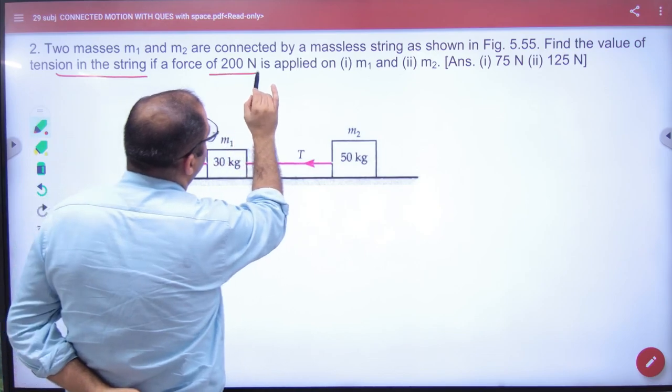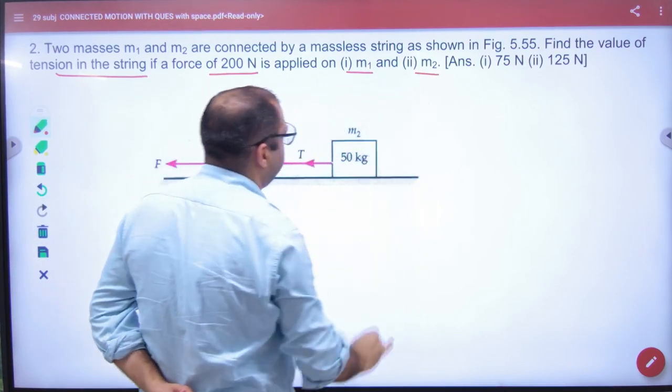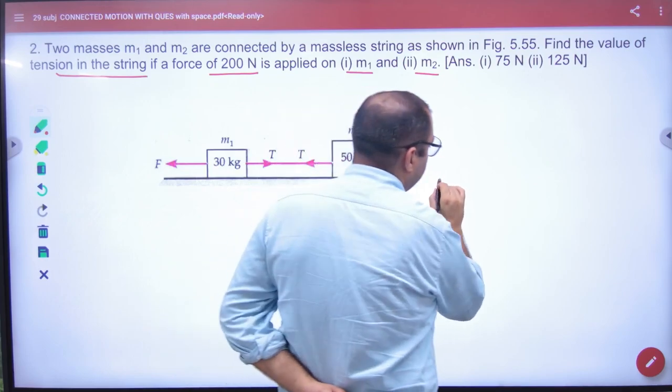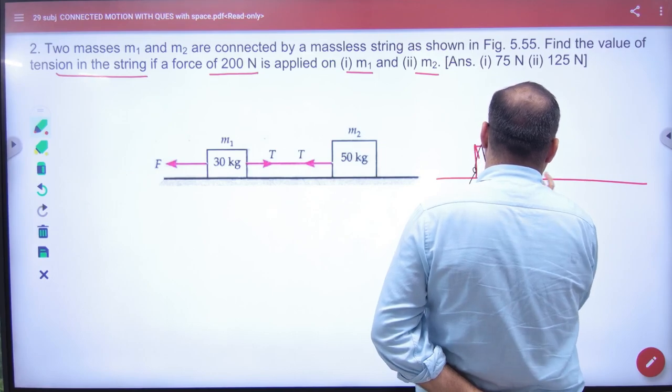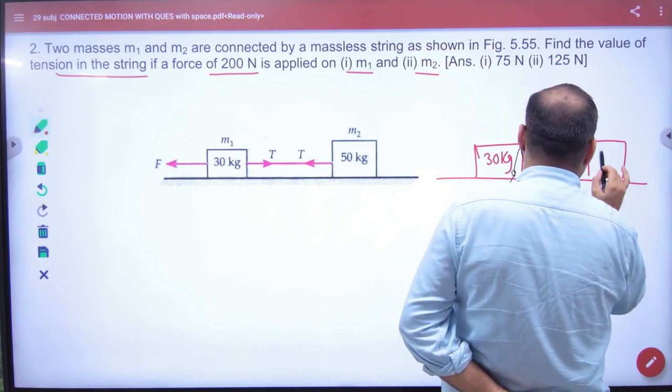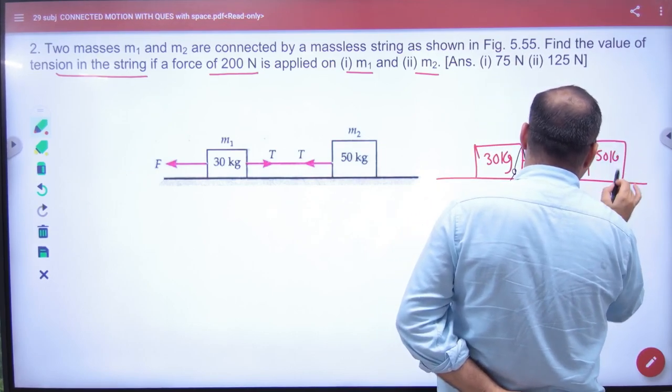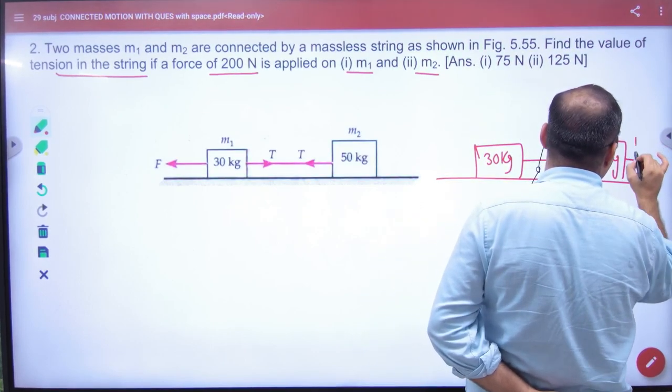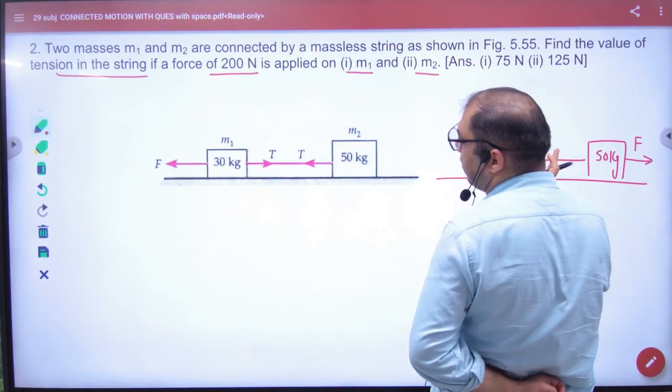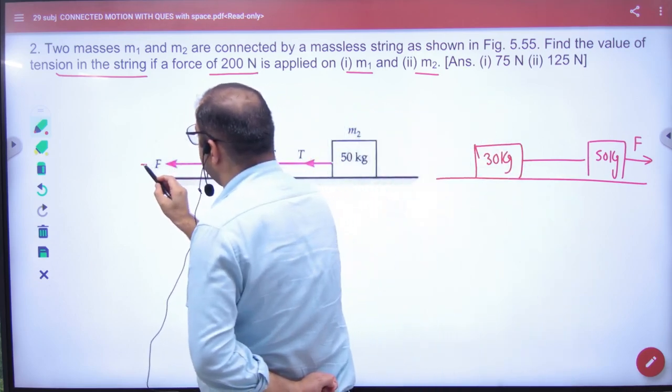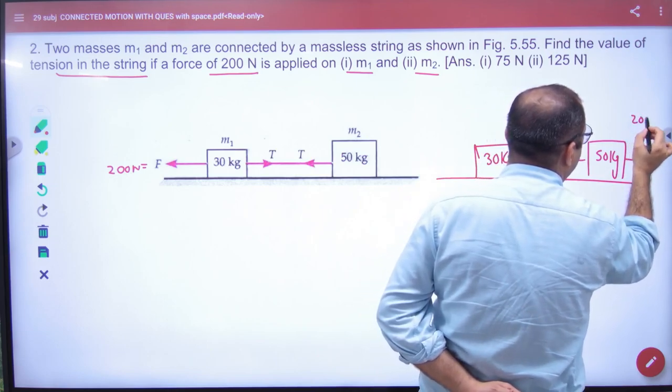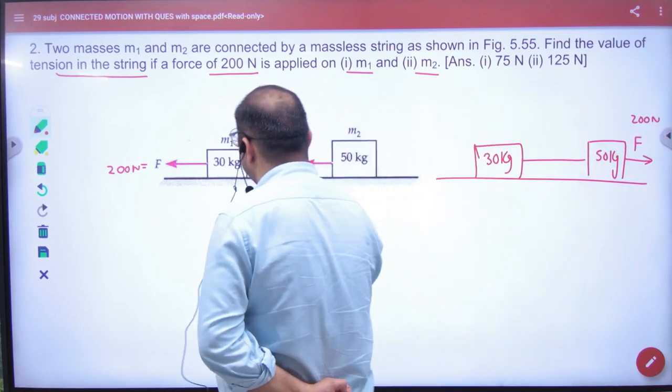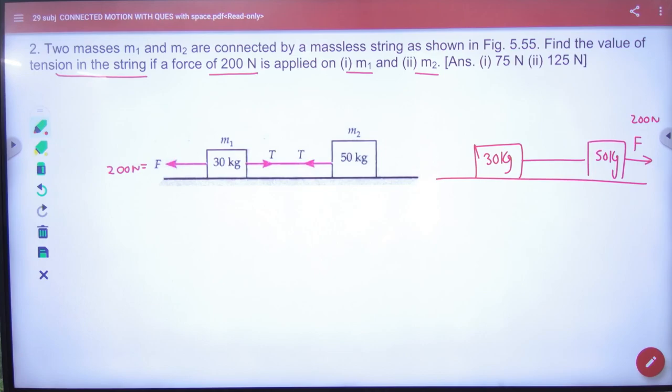When 200 Newton is applied on M1 and M2, so in actual question is going to be solved two times. First the diagram has made one. In the second case, you will have this. And in this case force F, it has said to be right. What is the point clear here?